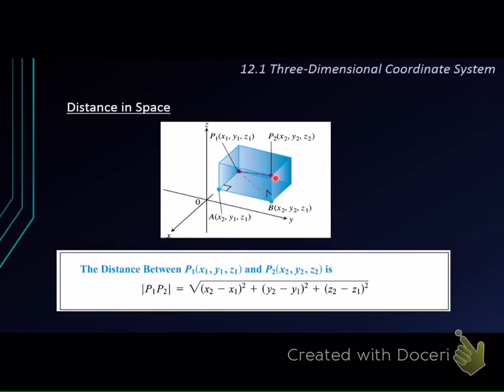Let's take a look at the two points in the graph here. This point is P1 with the coordinate of x1, y1, z1, and this is the point P2 with the coordinate x2, y2, z2.